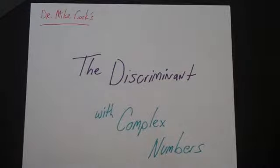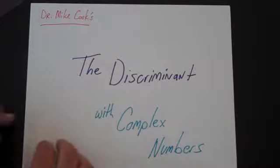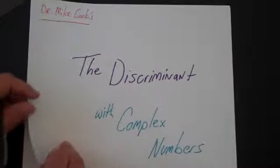Now let's look at the discriminant, but now let's look in the case when you have not just real numbers, but complex numbers. So again, the discriminant is simply b squared minus 4ac.